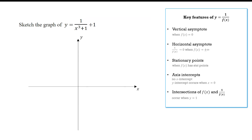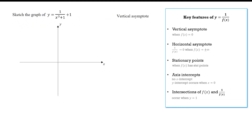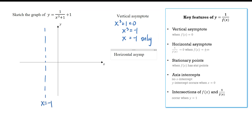In the third example, the denominator is a cubic. It's worth noting that this function is technically not a reciprocal function — it has a reciprocal function inside it plus 1 on the end, which translates the whole thing one unit up. We find the vertical asymptote by setting the denominator to zero, giving a single vertical asymptote at x equals negative 1. The horizontal asymptote is y equals 1 rather than y equals 0, because the reciprocal part approaches 0 but the plus 1 shifts everything up.